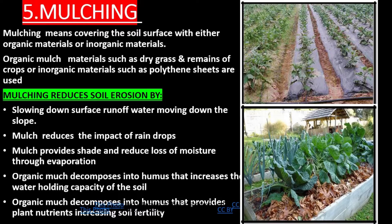Mulch provides shade and reduces loss of moisture through evaporation. Organic mulch decomposes into humus that increases the water-holding capacity of the soil. Organic mulch also decomposes into humus that provides plant nutrients, increasing soil fertility.